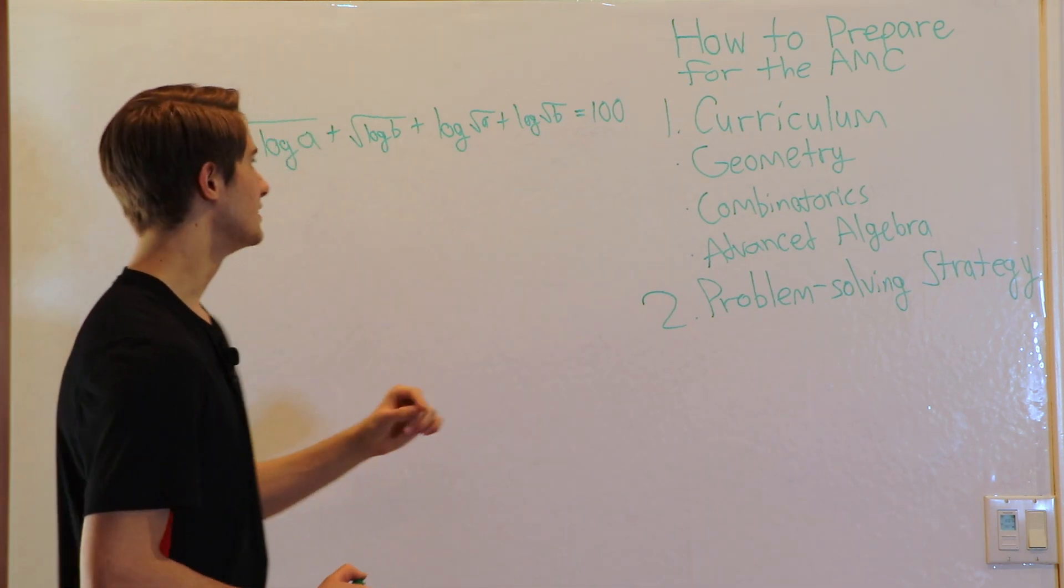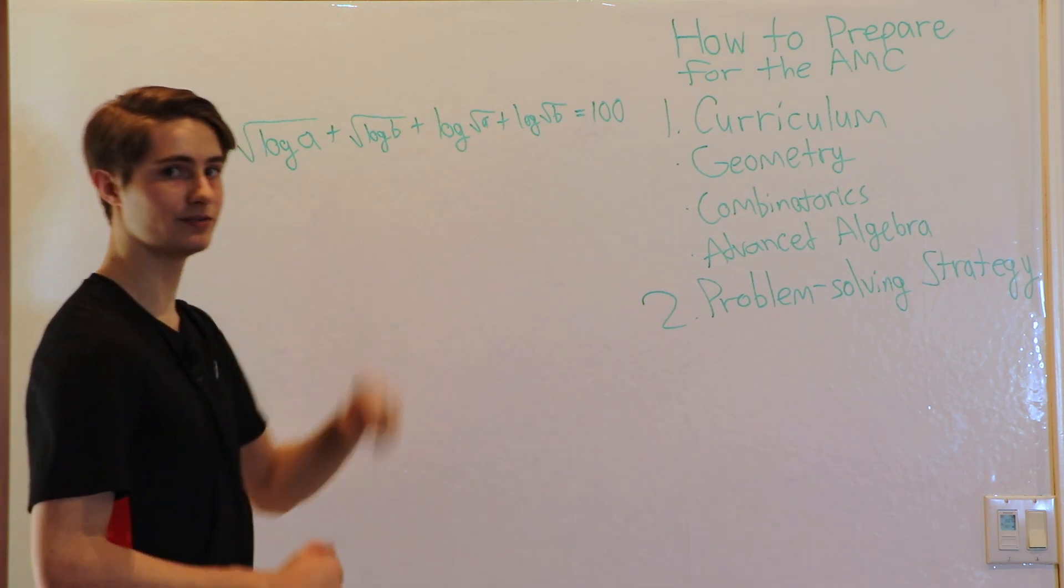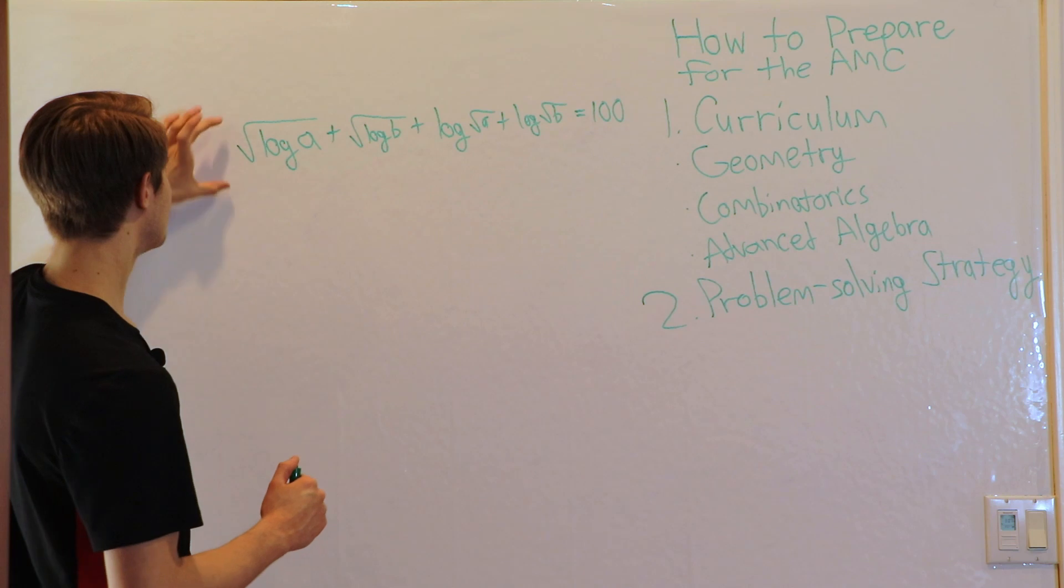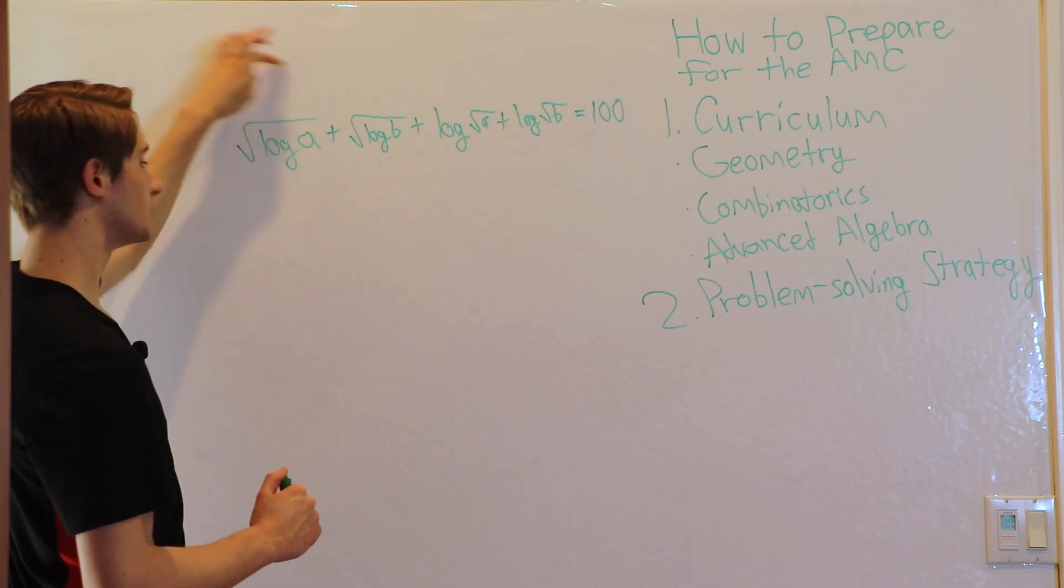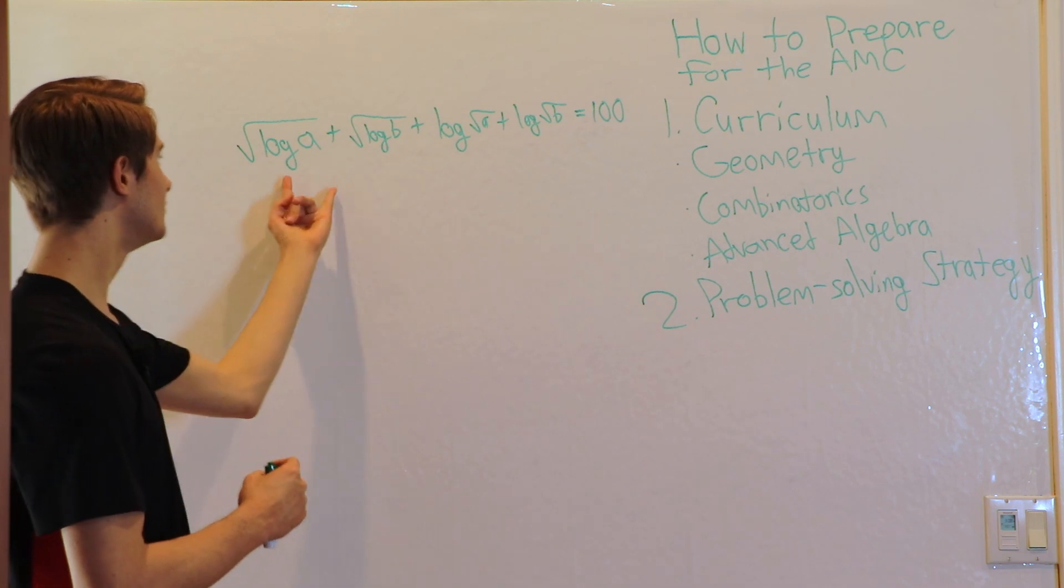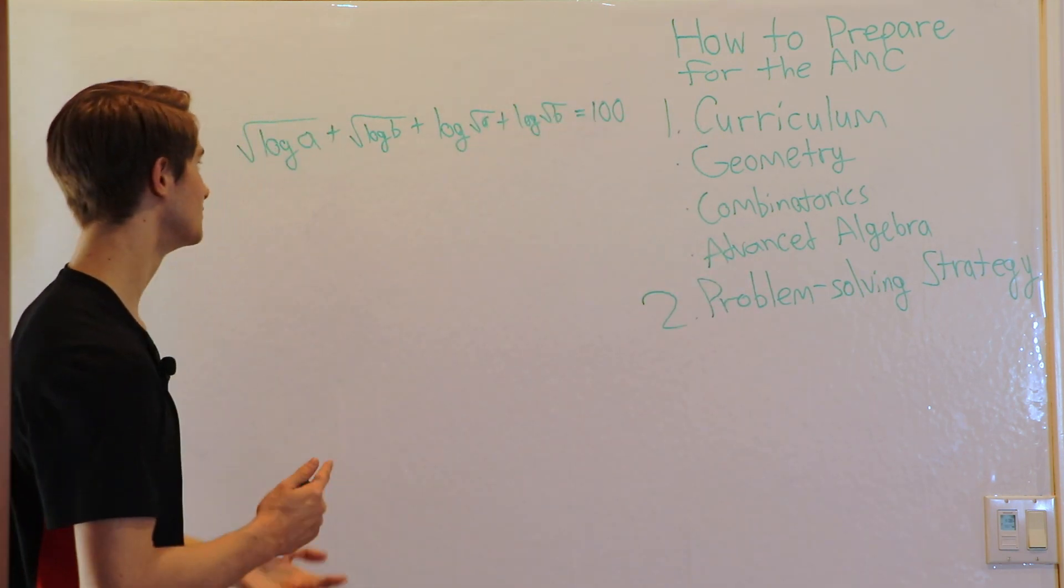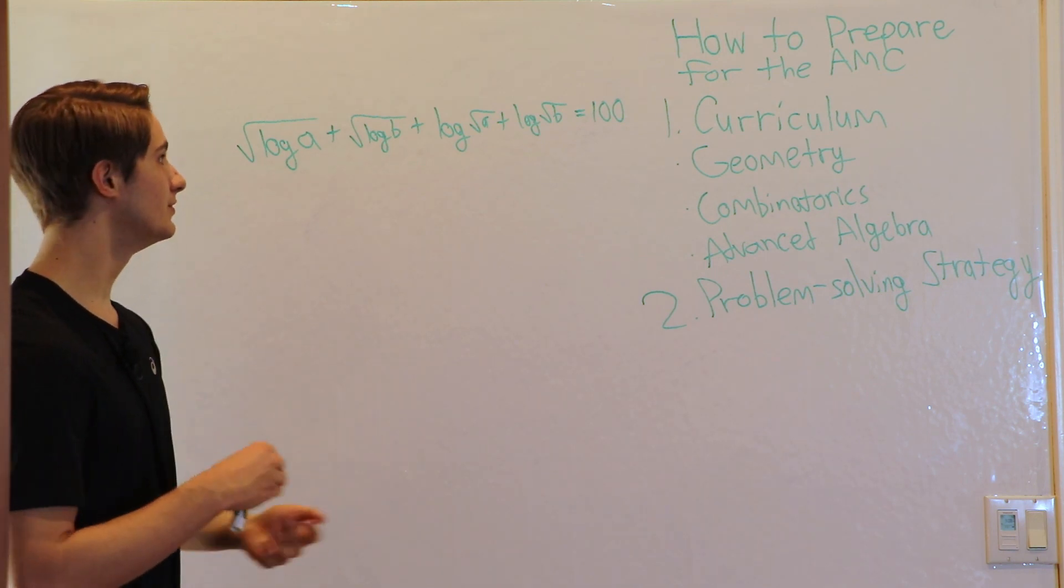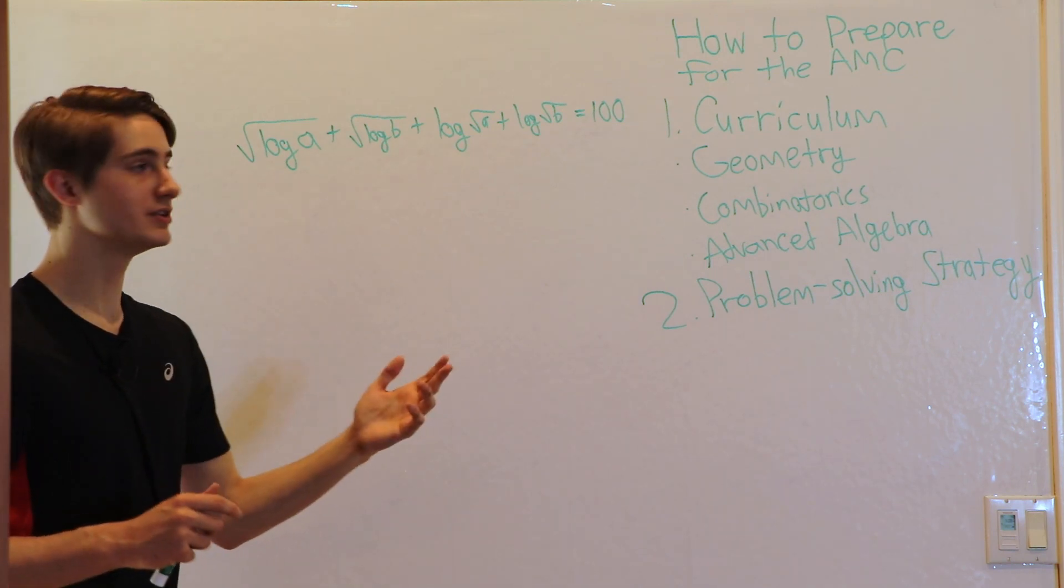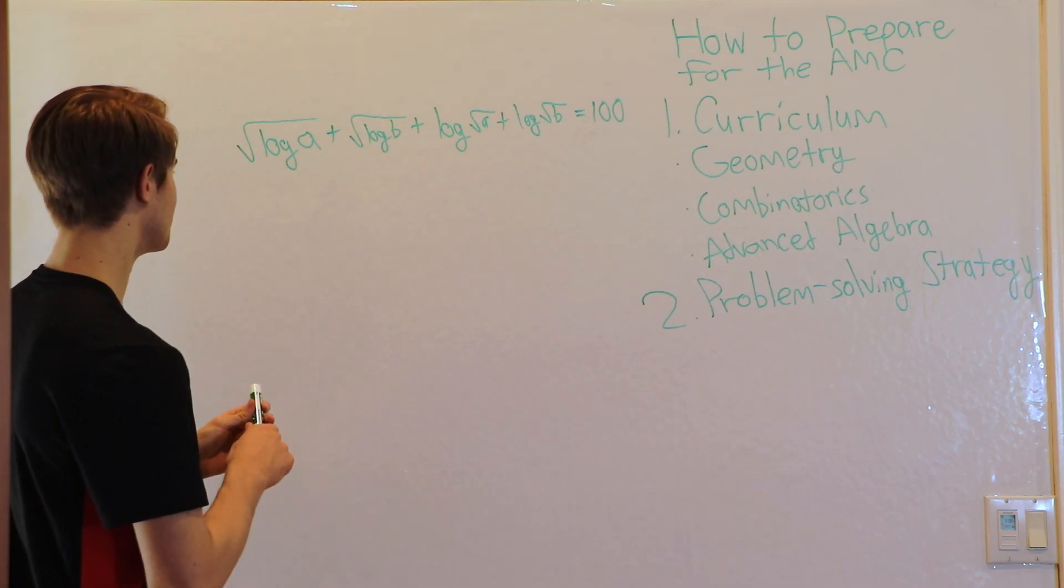Say you see this log square root a and you think oh I know square root is a one-half power so I can pull this one-half out to the front. Maybe you think what if I substituted this entire square root log a expression? Would that make the equation easier to see? What if I moved these two to the other side and took ten to the power of each side? Would that make it easier? You keep moving, keep moving until eventually your brain figures out what is going on.